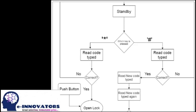Now let's jump into the programming of our project. First, see the flowchart. Initialize the Arduino in standby mode and ask the user to enter the code. If the user presses the asterisk key (*), it will ask for a code; after reading the code, if it is correct it will open the door and move the servo motor. If it is not correct, it will go back to standby mode.